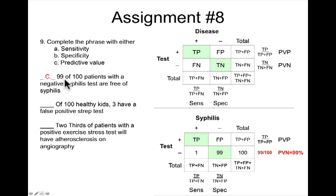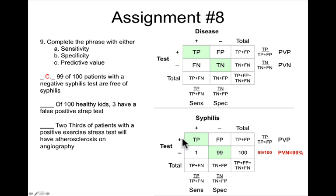The first phrase: '99 of 100 patients with a negative syphilis test are free of disease, or free of syphilis.' The answer is C, predictive value. Predictive value here is predictive value negative, in that we know we have people with negative tests, represented by the bottom row of this table. There are 100 people with a negative test; 99 of those do not have disease — they are true negatives. The predictive value negative is 99%.